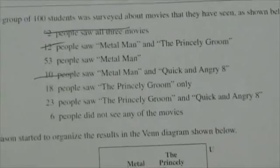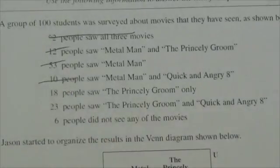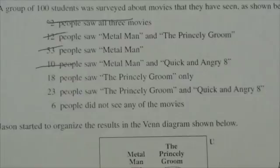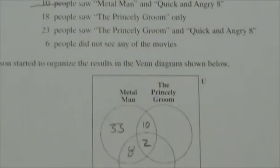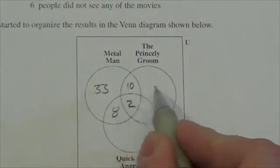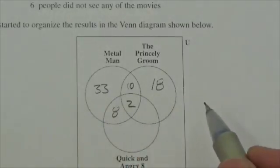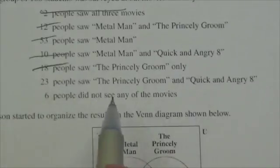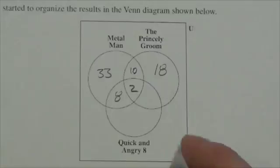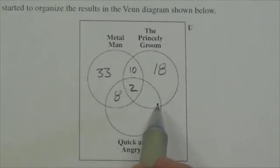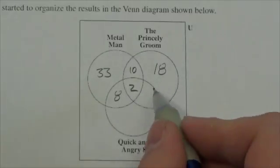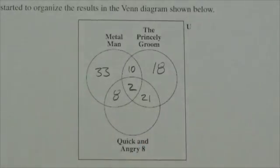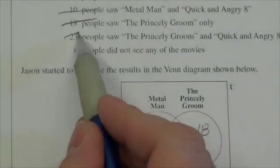We're told 18 people saw Princely Groom only, so that goes in this bit right here. Twenty-three people saw Princely Groom and Quick and the Angry 8, so that's this overlap. But that's broken into two parts - there are two there, which leaves us with 21 in that little bit.